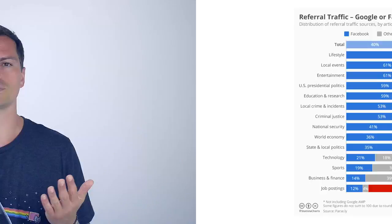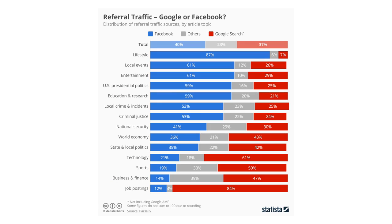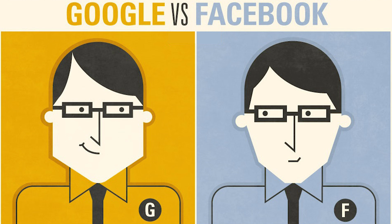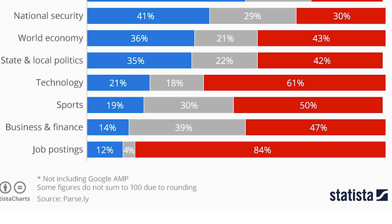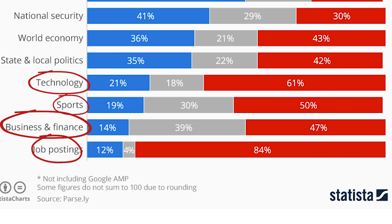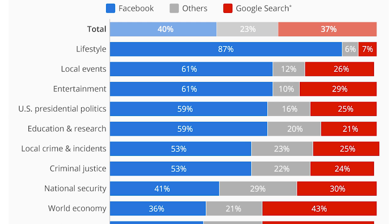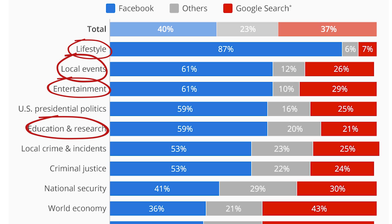Now let's look at some charts. This one's pretty interesting because it gives us a breakdown of the Google versus Facebook battle — basically search versus discovery per industry. Google still seems to dominate for things like jobs, business offers, sports, and tech, while Facebook, which is more of a discovery platform, is starting to dominate in events, lifestyle, entertainment, and education. Go and check it out.